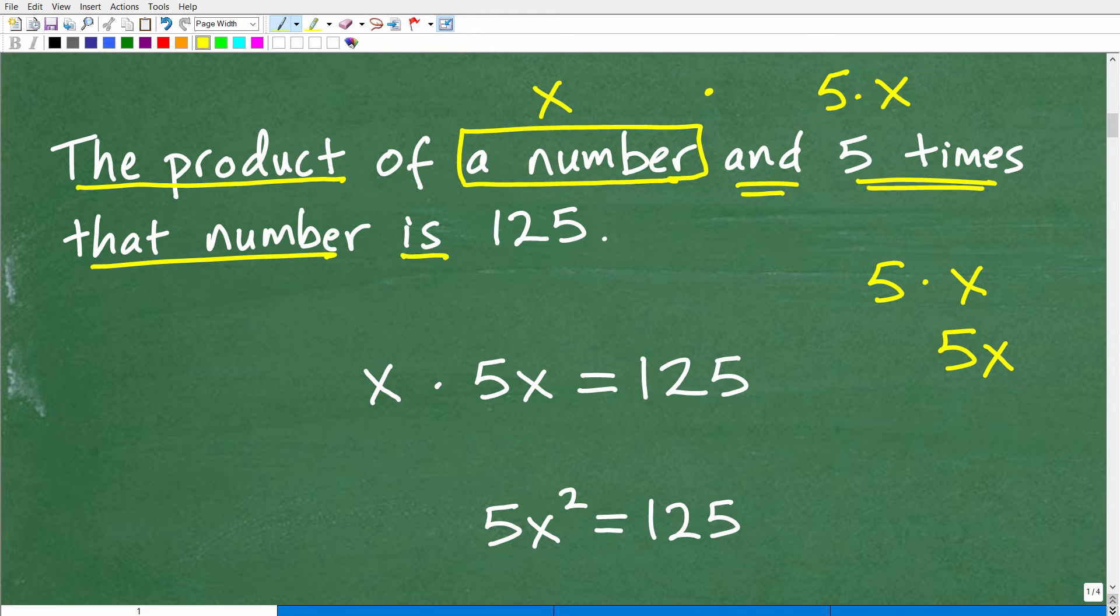So the product of a number and five times that number. So that's going to be X times 5X. All right? Is. Now, is. When you see is in a phrase, a verbal phrase, it's always the equal sign. So it's is or equal to 125.